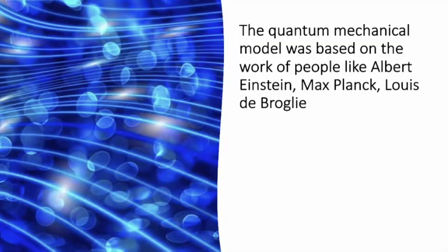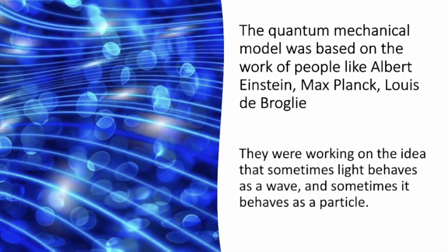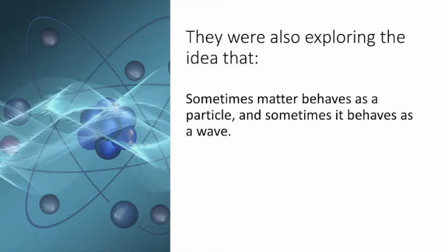The quantum mechanical model of the atom was proposed to account for some of this weird stuff. It was based on the work of people like Albert Einstein, Max Planck, and Louis de Broglie. These scientists were working on the idea that sometimes light behaves as a wave and sometimes as a particle. They were also exploring the idea that sometimes matter behaves as a particle and sometimes as a wave.